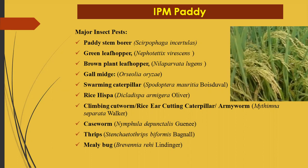Many pests attack paddy and are responsible for reducing yield. The major pests are: paddy stem borer, green leaf hopper, brown plant hopper, gall midge, swarming caterpillar, rice hispa, cutworms, caseworm, and mealybugs. Some are defoliators, some are plant suckers, and some are borers. These are the major pests of paddy. From an examination point of view, mention any two pests if asked.